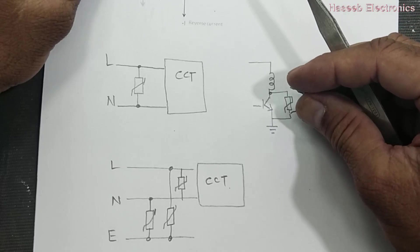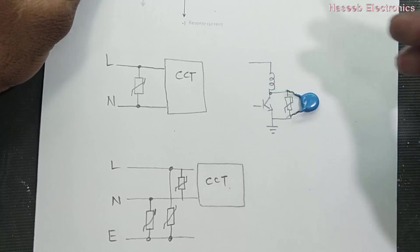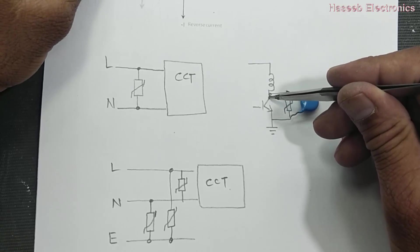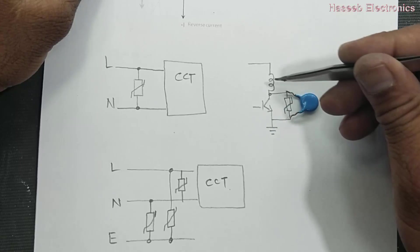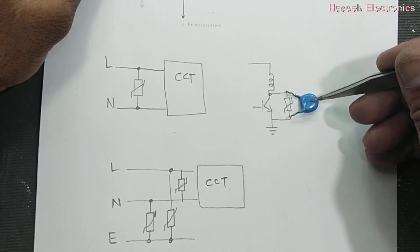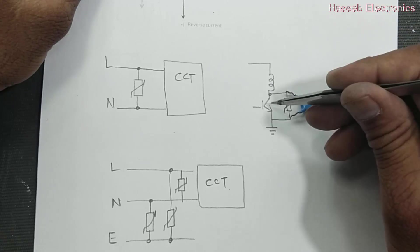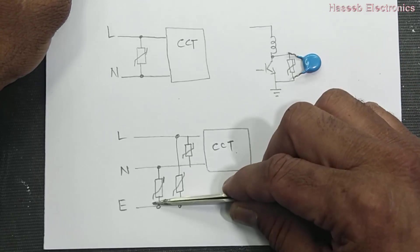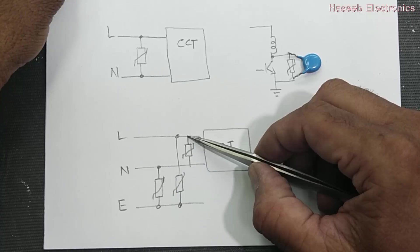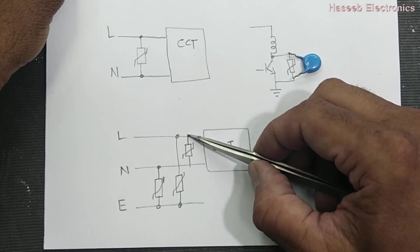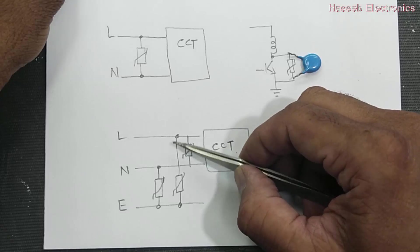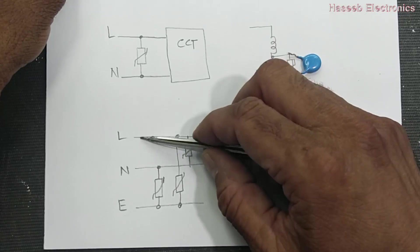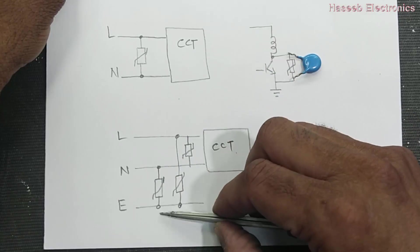If we install it in parallel to a transistor or a switching device, it will protect that transistor. For example, its maximum allowed voltage is 250 volt — if a coil generates more voltage, it will bypass and protect the transistor from over-voltage. It can be used in a three-line configuration for common mode and differential mode. If we use it in three lines — line to earth, neutral to earth, neutral to ground — any noise in any line will be eliminated.